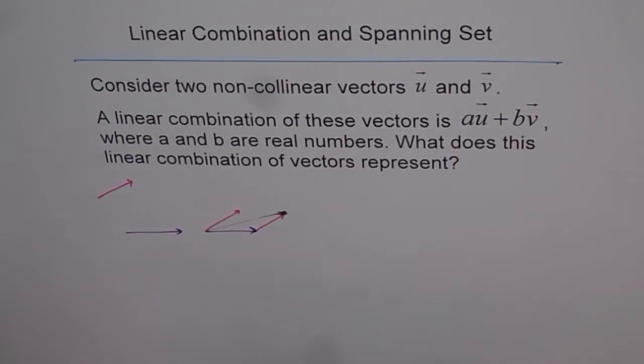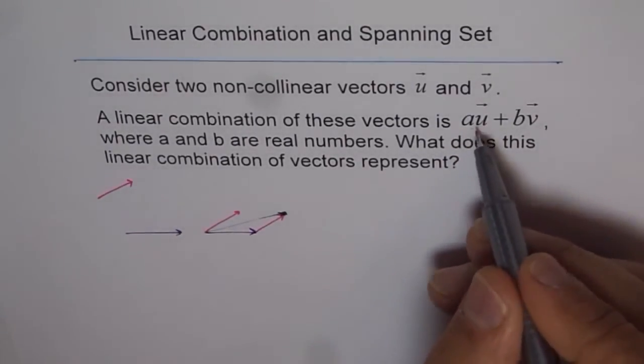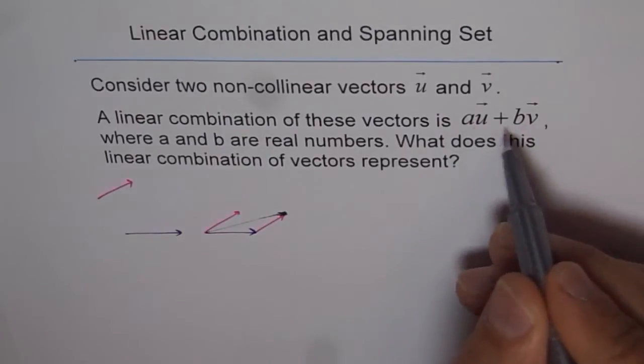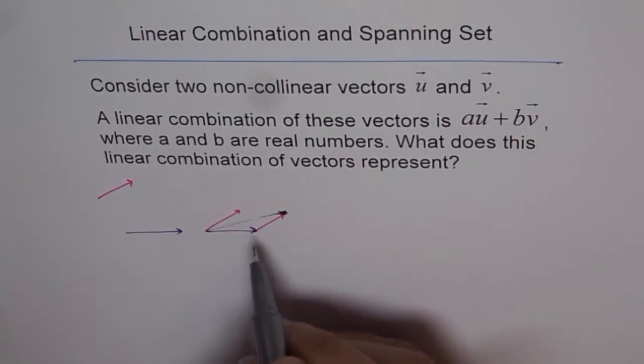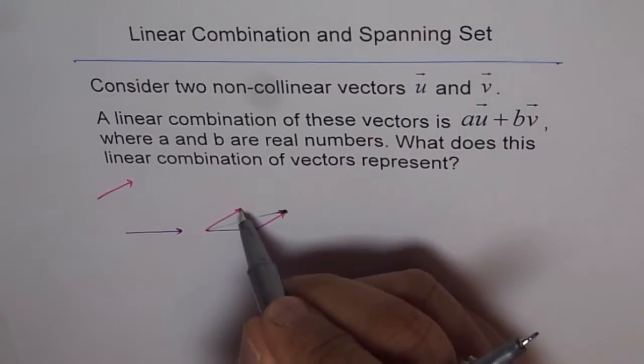But if we scale it, let's say a times u, let a and b be some numbers, but not one. Let us say a is 2 and b is also 2.